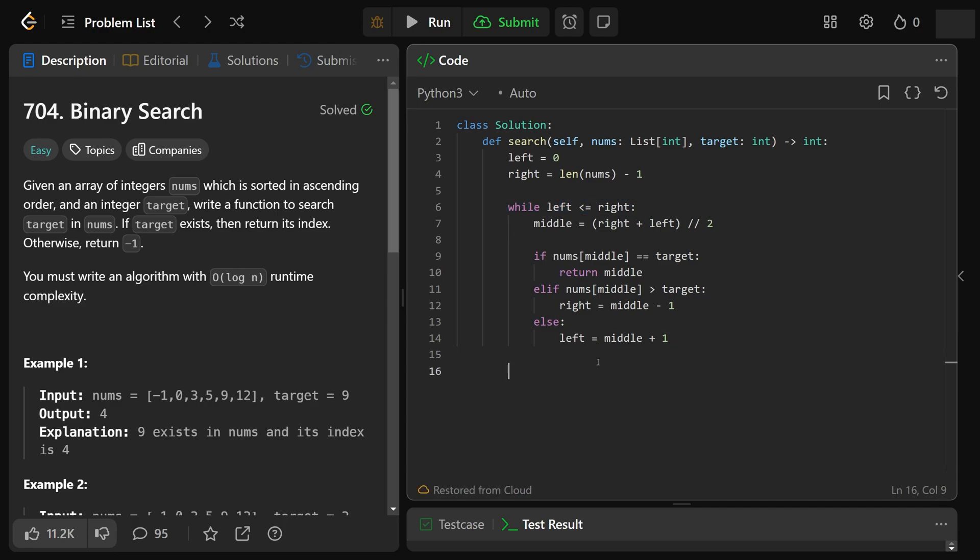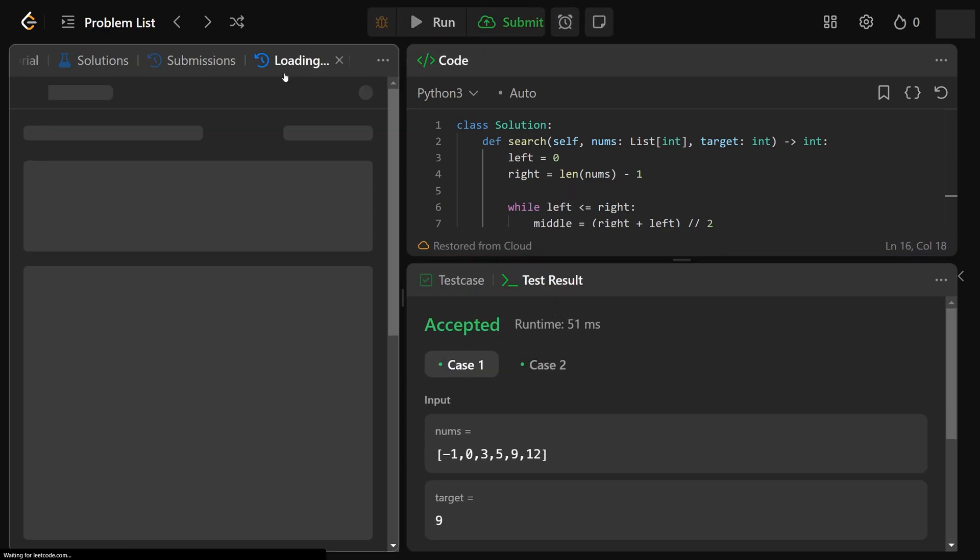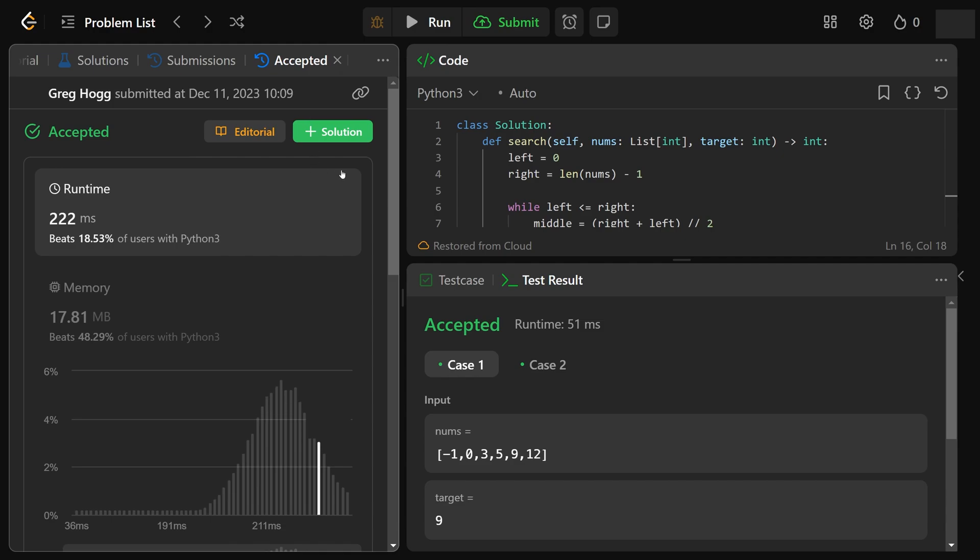If we ever exit this, that means we did not find it because left and right did this crisscross thing, and so we return minus one. If we run our code, we will be greeted with we are awesome. We can submit that. Have a great day, guys. I hope that was helpful.